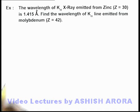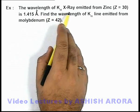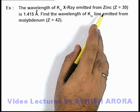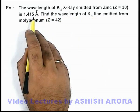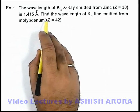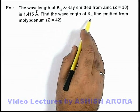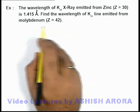In this example, we are given that the wavelength of K-alpha X-ray emitted from zinc is 1.415 angstrom, and we are asked to find the wavelength of K-alpha line emitted from molybdenum.